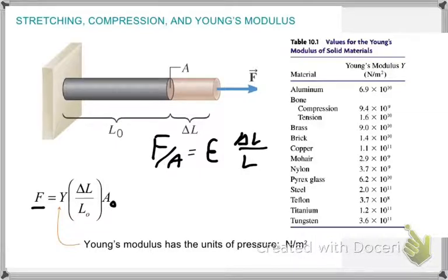Over here we have several values. It gives you Young's modulus for different materials, all the way up to tungsten, all the way down to aluminum.